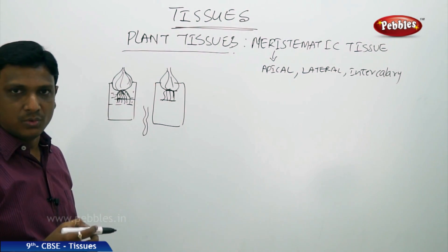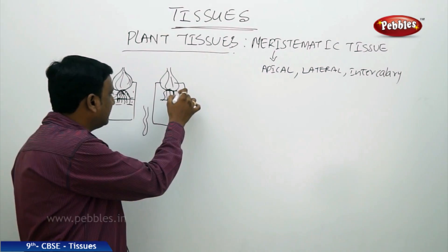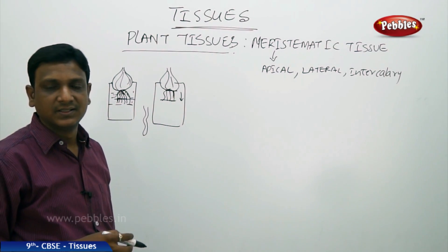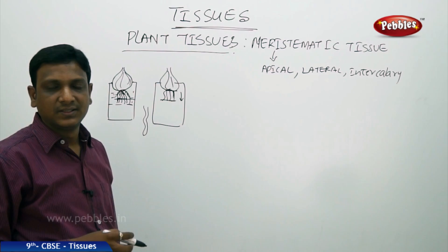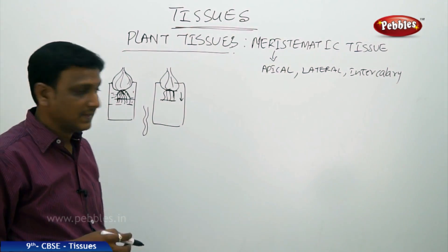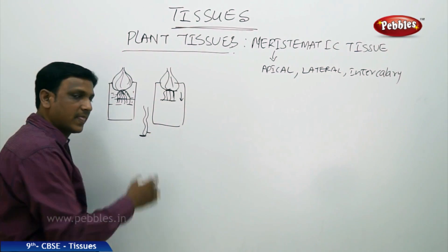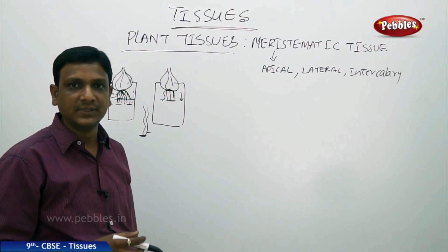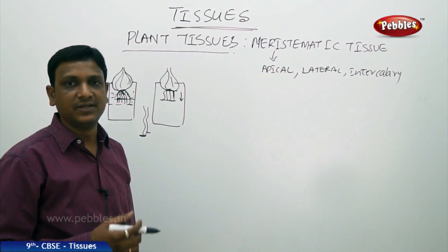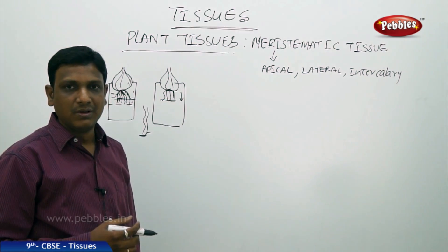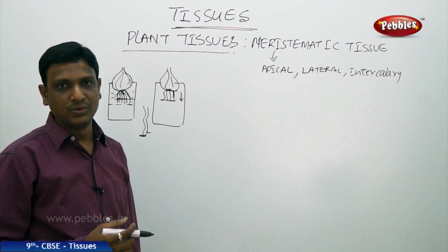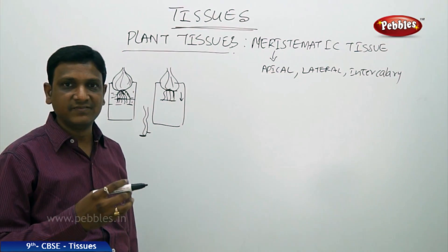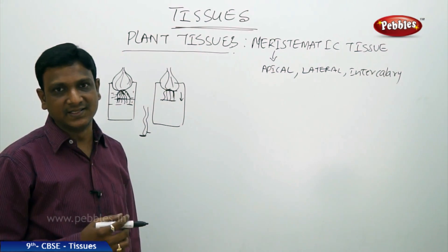After cutting the root tips, the growth is decreased. This shows that the tips are actively growing — the tips contain some active tissue which actively divides. So the meristematic tissue is an actively growing tissue which consists of actively dividing cells.